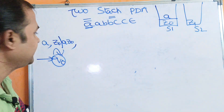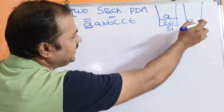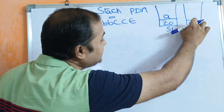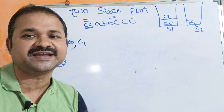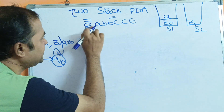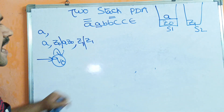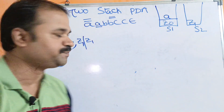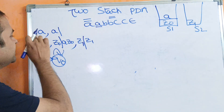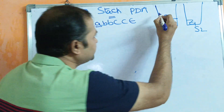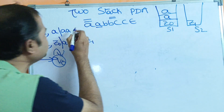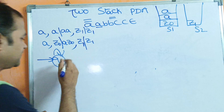Stack 2 is empty with topmost symbol Z1. If the input symbol is A and stack 2 topmost symbol is Z1, no operation is performed — keep Z1 as it is. For the next input A, if stack 1 topmost symbol is A, push A onto stack 1 again. Stack 2 remains unchanged with Z1.